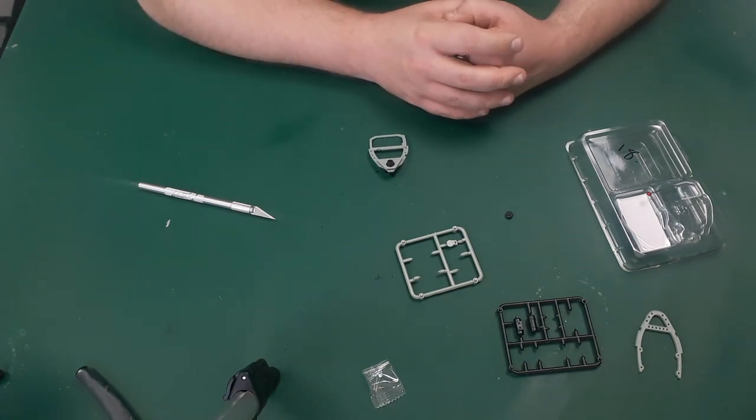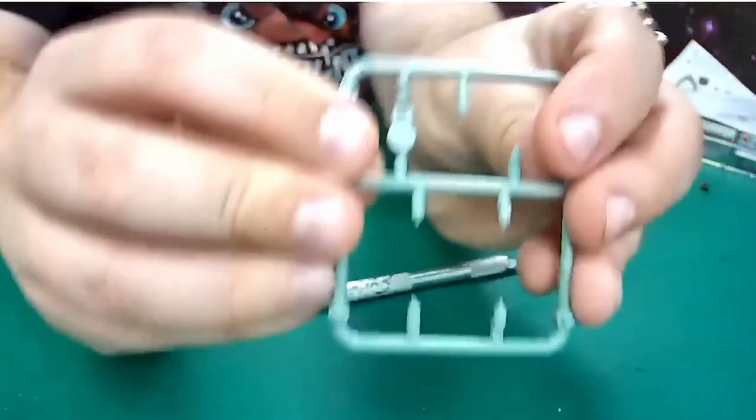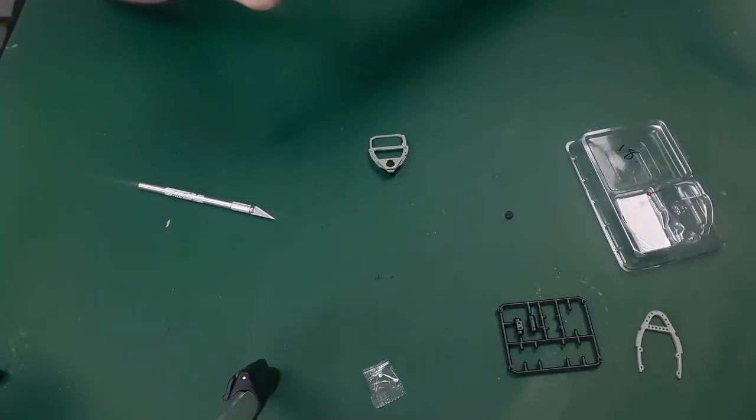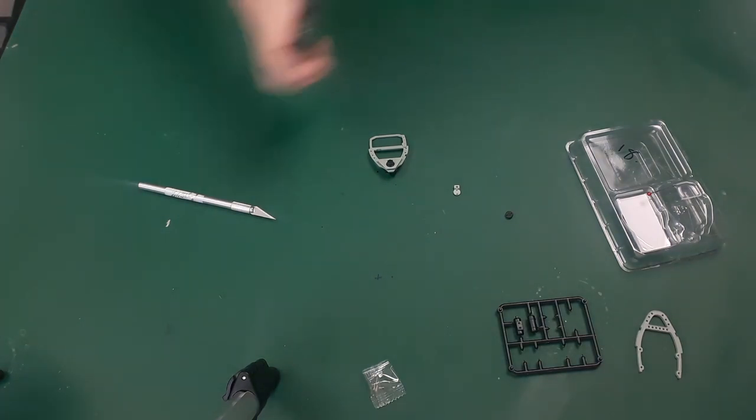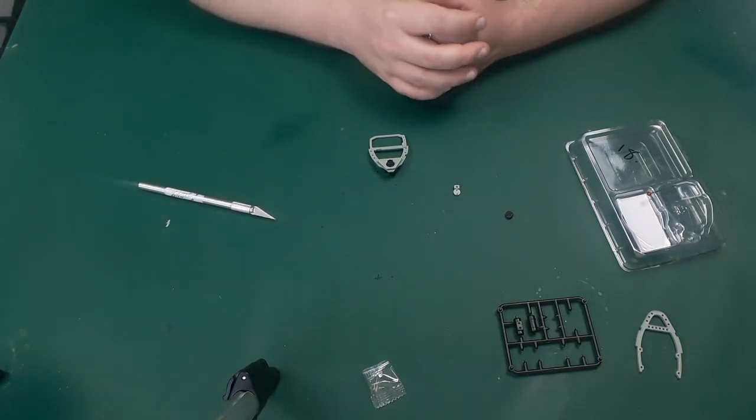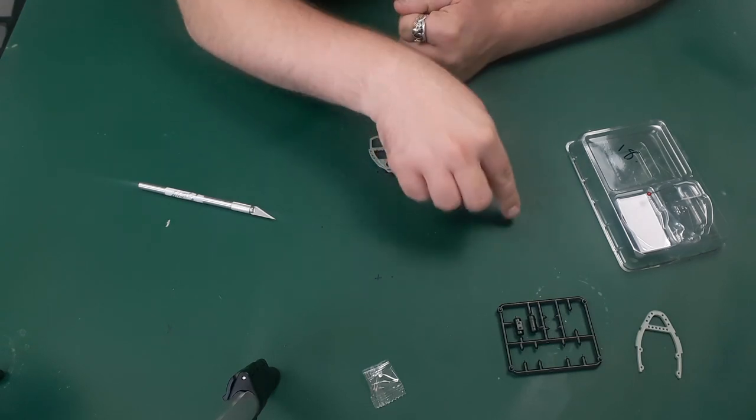Cut part H from the frame 16.7. So that's this one just here, part 16H. There, that can be got rid of now. And then we'll cut part G from frame 18.4, which is the one that we've got just here.